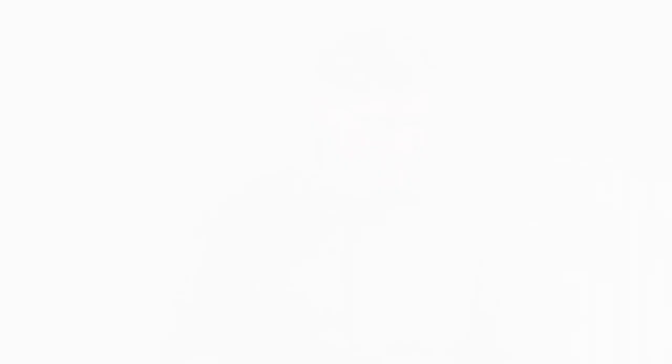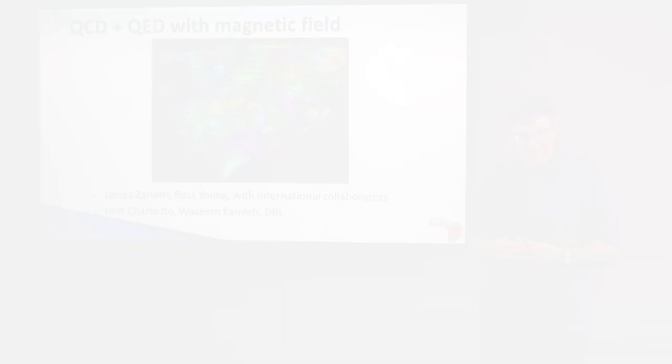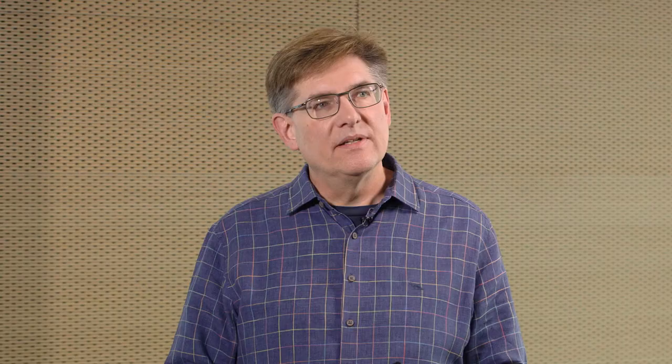So I now want to talk to you about the magnetic field. There's a magnetic field that's generated by the motion of those quarks. The electric charges that we were looking at in the previous animation. We want to understand how that magnetic field interacts with the quantum chromodynamic parts of what's going on in the vacuum.